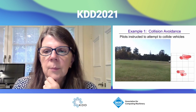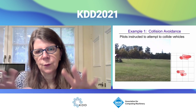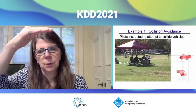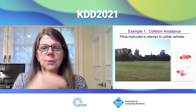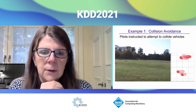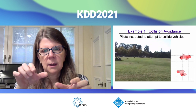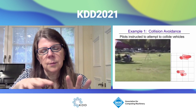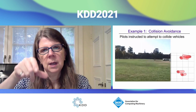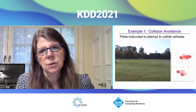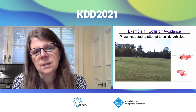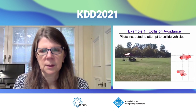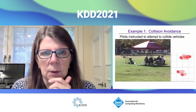For four vehicles, the problem is high-dimensional when you group all vehicle states together. But the collision avoidance function can be decomposed into pairwise collision avoidance problems, reducing dimensionality. This works particularly for quadrotors because they can hover in place. This decomposition doesn't always hold, which we'll return to later.